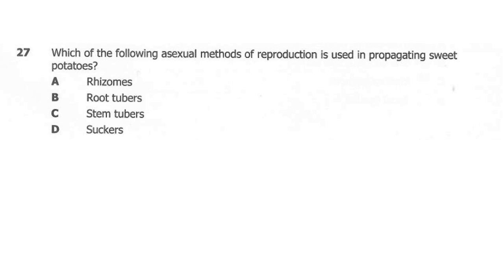Question 27. Which method of vegetative reproduction is used in propagating sweet potatoes? A: rhizomes. B: root tubers. C: stem tubers. D: suckers. The correct answer here is B, root tubers. Sweet potatoes are actually modified roots which end up forming root tubers. For stem tubers, that is for the Irish potato. But for root tubers, we have sweet potatoes as well as cassava.